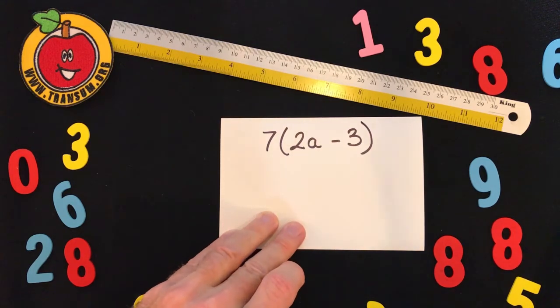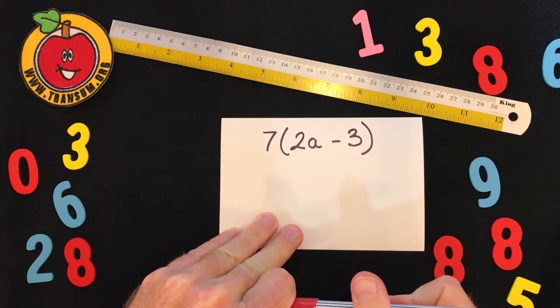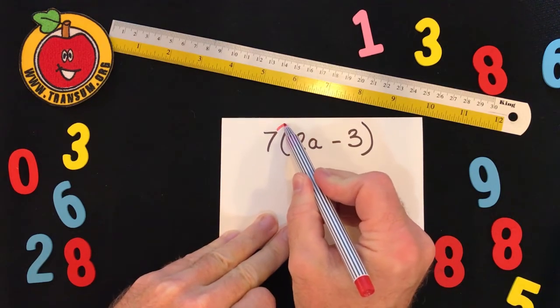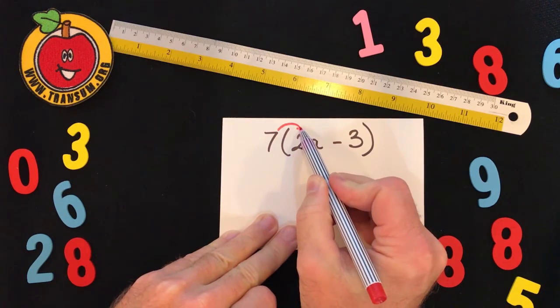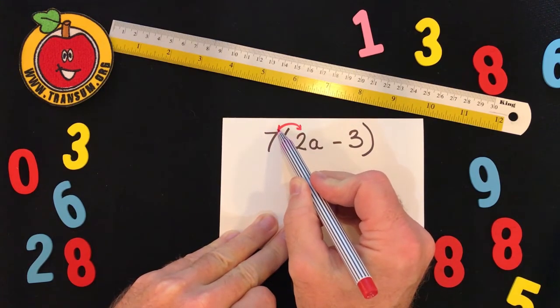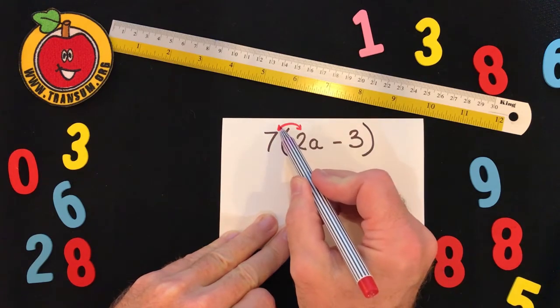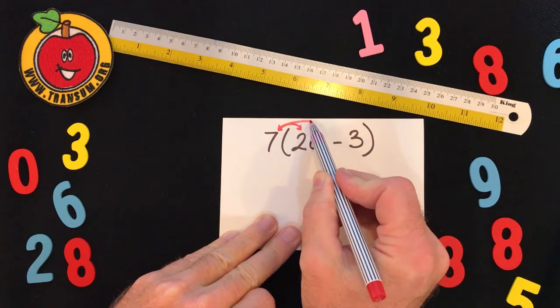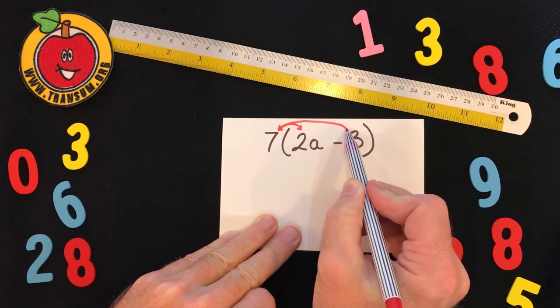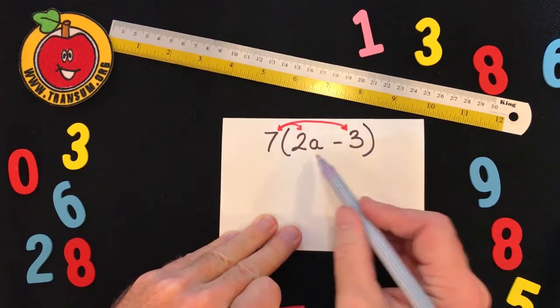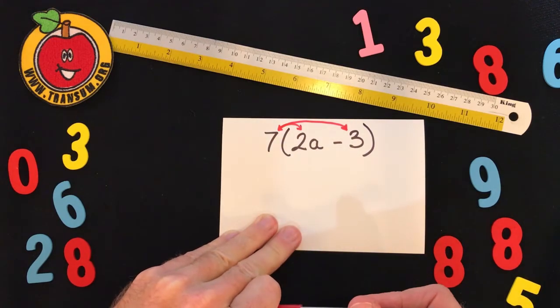What we have to do is remember to multiply the seven by the 2a, and I'll draw a little double-headed arrow here to show that seven must be multiplied by the first term 2a. And the second term, minus three, also has to be multiplied by the seven, so I'll draw another little double-headed arrow to remind me there.